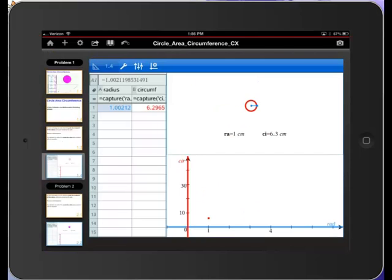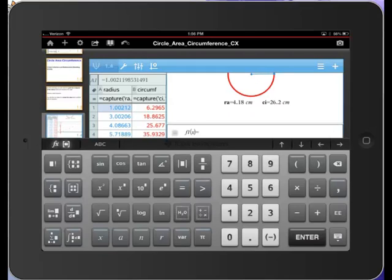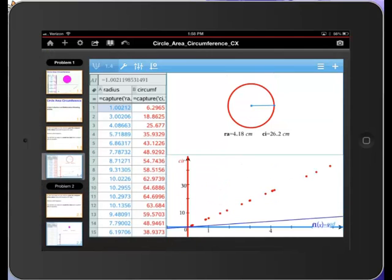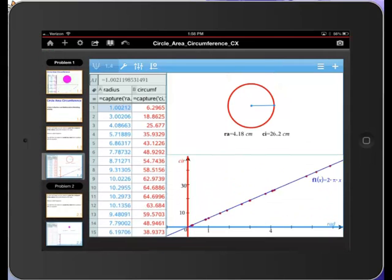Collect data with the touch of a finger and plot it. Try to model the data with an equation. Let's try f of x equals x. Let's touch and move that line so that it is a better fit. But we can also find the exact equation of this line because we know this is a circumference, 2 π x. Nice.